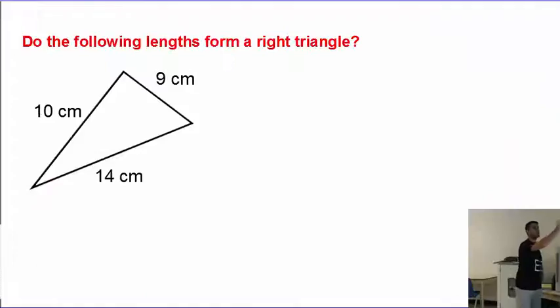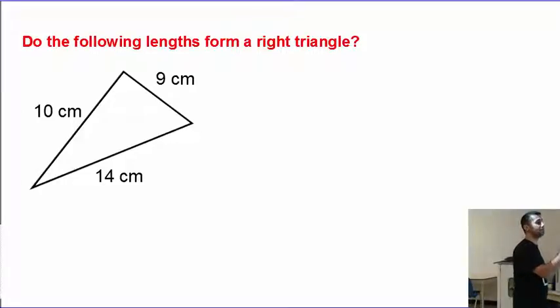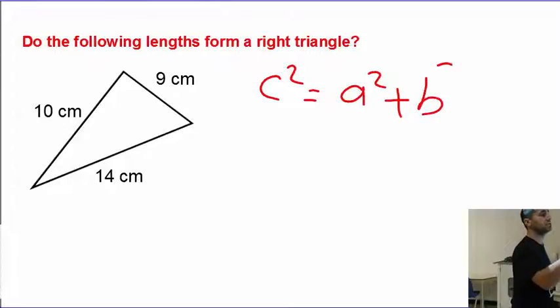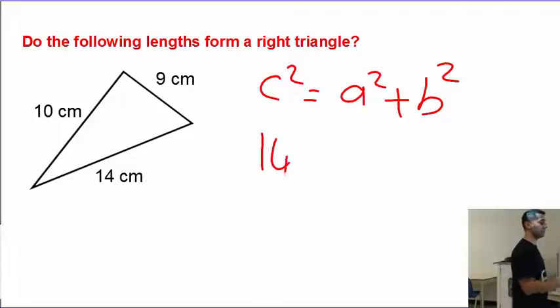Let's move on to the next question. Do the following lengths form a right triangle? 9, 10, 14. I don't know. Let's figure it out. I'm going to write down the Pythagorean theorem first. C squared equals a squared plus b squared. C, which one is c? The longest. The longest one is c. I'm going to write down 14 here. Square that. For a, I'm going to call this one a, call this one b.